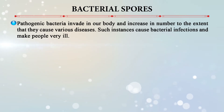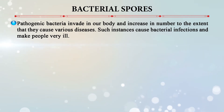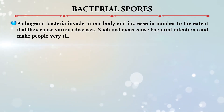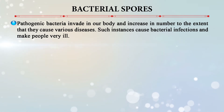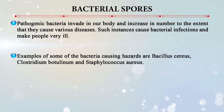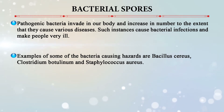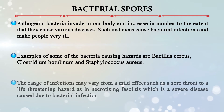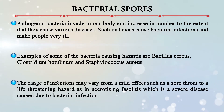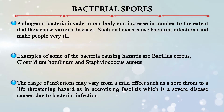Pathogenic bacteria can invade our body and increase in large numbers, causing various diseases. Bacterial infections can be severe and make people very ill. Examples of pathogenic bacteria include Bacillus cereus, Clostridium botulinum (which causes botulism), and Staphylococcus aureus. The range of infections can be mild to very severe — from a mild sore throat to life-threatening conditions such as necrotizing fasciitis. Bacteria are normally vulnerable to certain antibiotics, which is why bacterial infections are treated with them.